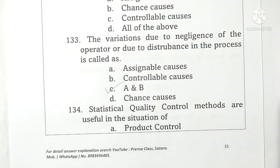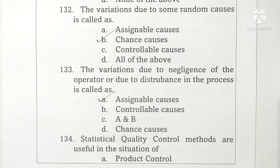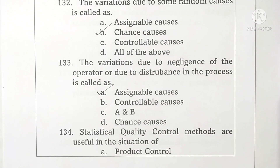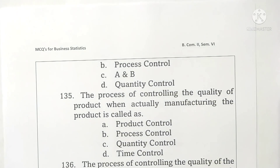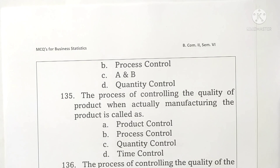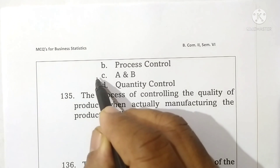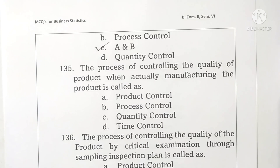Question 134: the statistical quality control methods are used in the situation of product control, process control, and both. Here A and B are correct, therefore option C is correct.